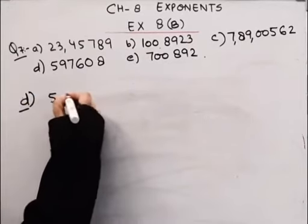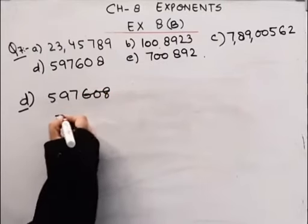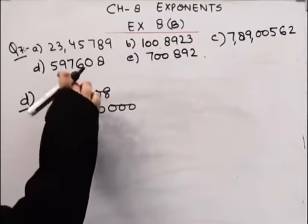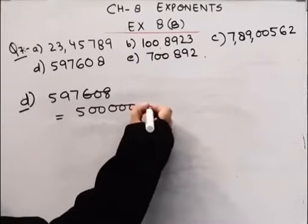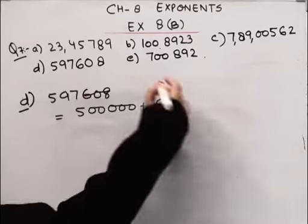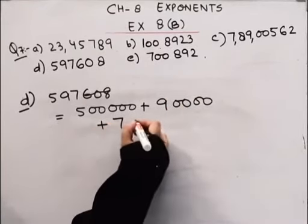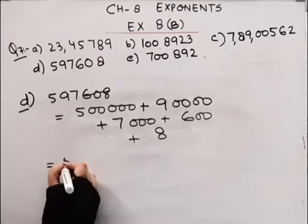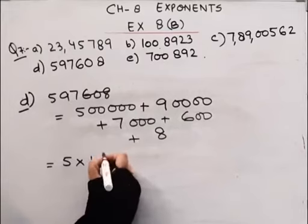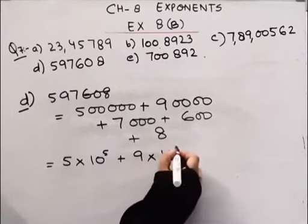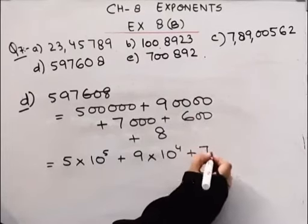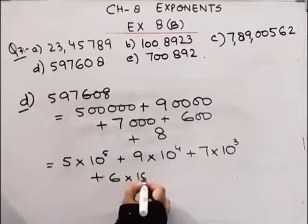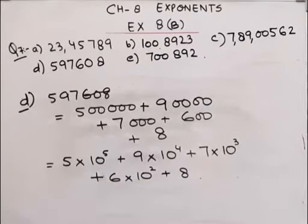Coming to D: 5,97,608. How do I write this? 5 — 1, 2, 3, 4, 5 zeros. How many digits after 5? 5. Plus 9 — 1, 2, 3, 4 zeros. Plus 7 — 1, 2, 3 zeros. Then you have 600. Then you have 8. So the answer is: 5 into 10 to the power 5, plus 9 into 10 to the power 4, plus 7 into 10 to the power 3, plus 6 into 10 to the power 2, plus 8. This is the answer for D part.